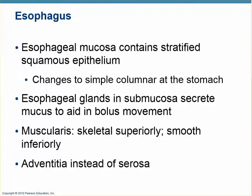The esophagus has a stratified squamous epithelium, which is different than the stomach — the stomach is a simple columnar epithelium. Because the esophagus has a stratified squamous epithelium, you can't have goblet cells to make mucus, but you need mucus to facilitate swallowing. So there are mucus glands in the submucosa that squirt mucus ahead of the swallowed bolus of food to facilitate swallowing.